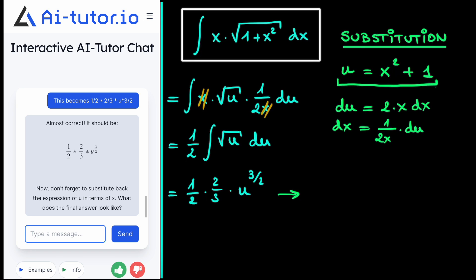Therefore, we just simply fill in u is equal to x squared plus 1 to get the final result. And of course, we can cancel these two 2s. So the final result becomes 1 over 3 multiplied by 1 plus x squared to the power 3 halves.